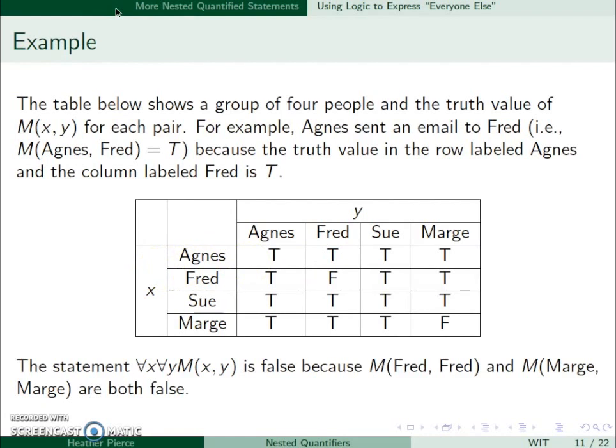So our statement ∀x∀y M(x,y) would be false since we do see that Fred did not send an email to himself and neither did Marge.